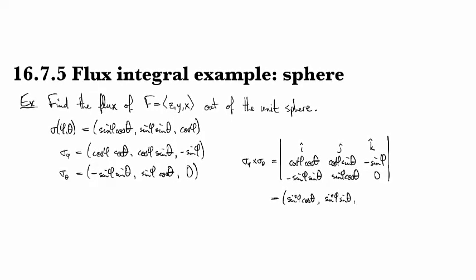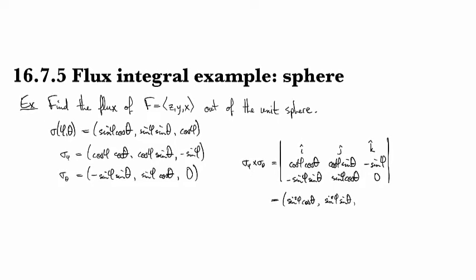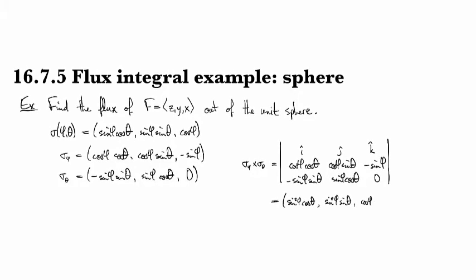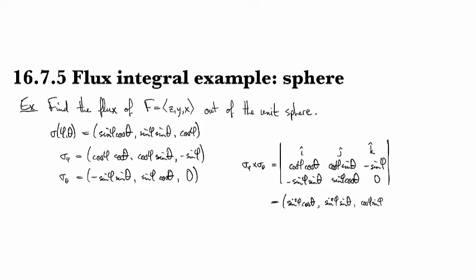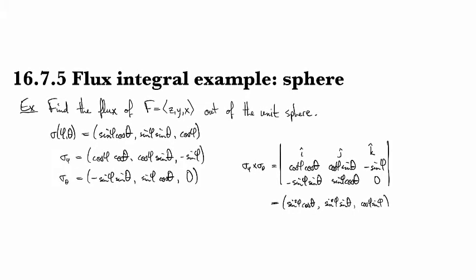And then in the last one, we get, let's see, cosine φ sine φ. So those both originally appear with a cosine squared and a sine squared factor, but then when you simplify, you get this guy.